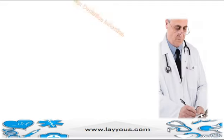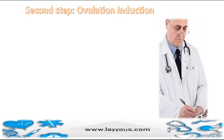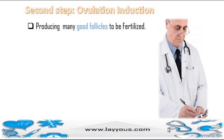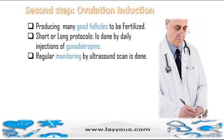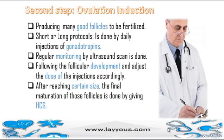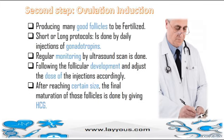Second step: ovulation induction. The aim is to produce many good follicles to be used for fertilization, using short or long protocols with daily injections of gonadotropins. Regular monitoring by ultrasound scan is done to follow follicular development and adjust the dose accordingly. When follicles reach a certain size, the final maturation is triggered by giving HCG.